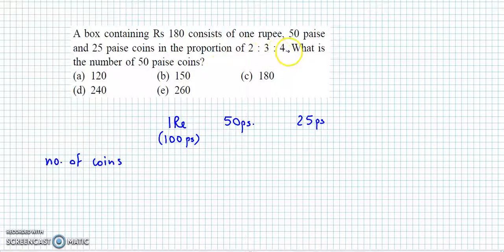diya hai as 2:3:4. To a common multiple x hai to number of coins ho jayenge 2x, 3x and 4x. And yahaan pe jo amount hume milega, 100 paise ke